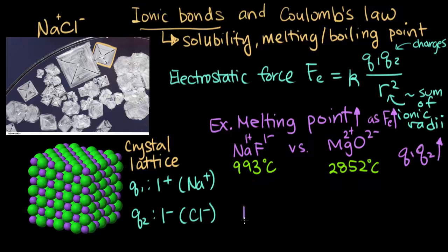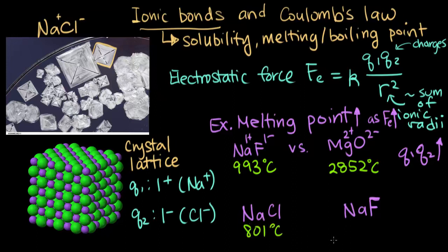We can also look at sodium chloride versus sodium fluoride. The melting point of sodium chloride is 801 degrees Celsius, and the melting point of sodium fluoride is 993 degrees Celsius.